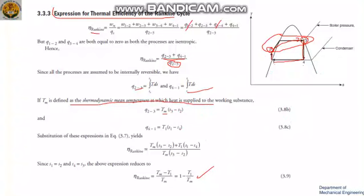Tm is the mean of T2 and T3. So q2 to 3 is nothing but Tm into (s3 minus s2).